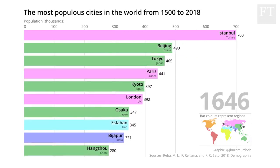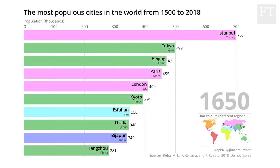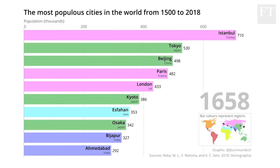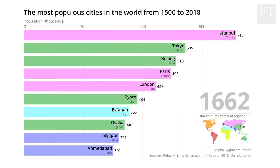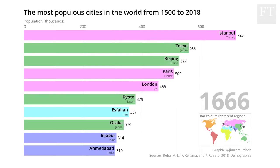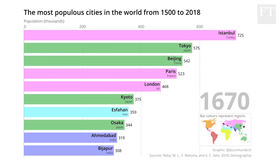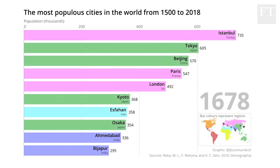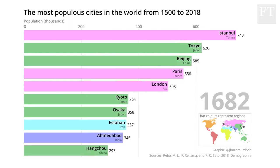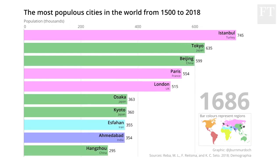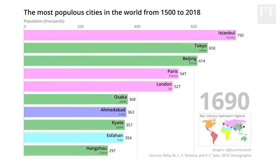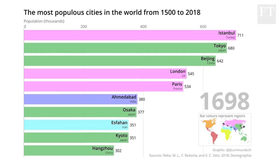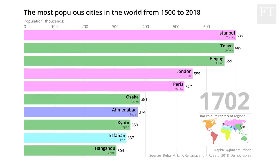As the 1600s continue, note Tokyo rising up there into second place. At this stage Western Europe, India and China are dominant, but things are about to change.